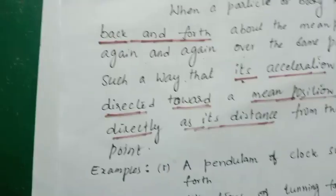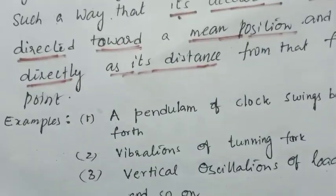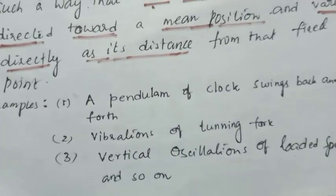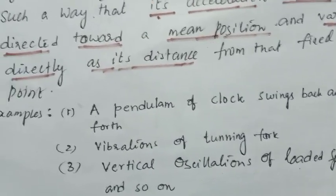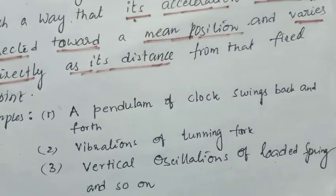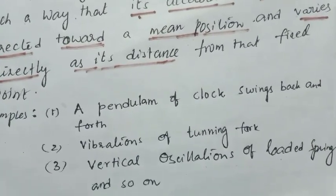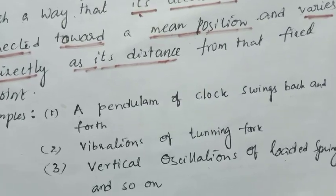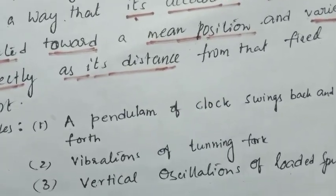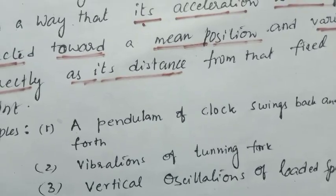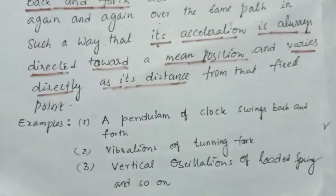Now let's see the examples of simple harmonic motion. The first example is a pendulum of a clock swinging back and forth — in everyday life we see a wall clock with a pendulum oscillating to and fro every second. The next example is the vibration of a tuning fork.